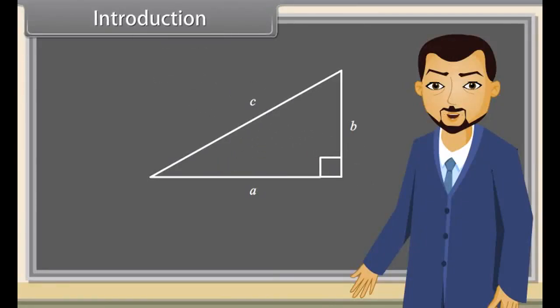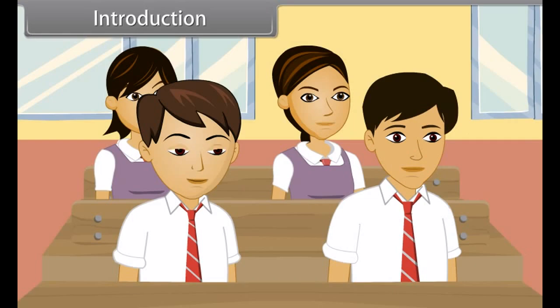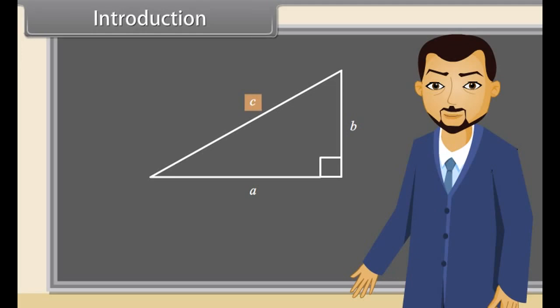Students, this is a right-angled triangle. Can you tell which side is the hypotenuse? C! C is the hypotenuse! Yes, C is the hypotenuse.